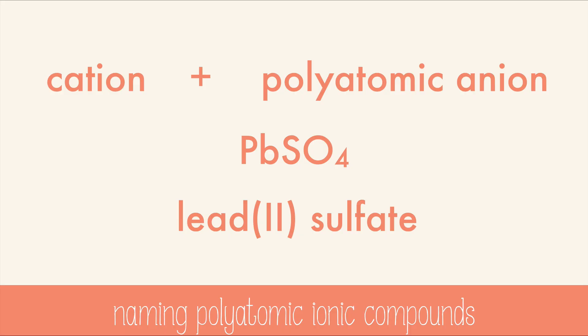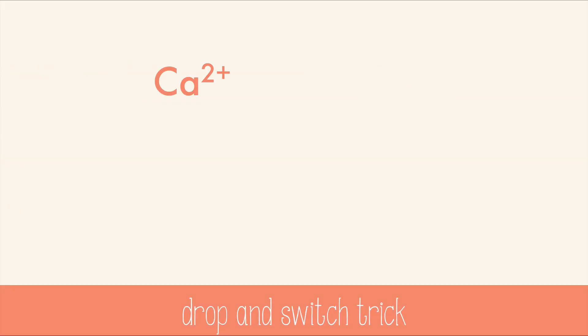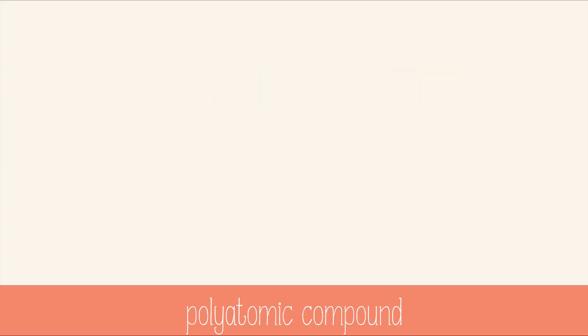And sometimes you have multiple polyatomic ions that are necessary, like in this case with calcium and the nitrate ion. Calcium is two plus, and nitrate is one minus. So when we do the drop and switch, we need to show that there are actually two nitrate ions, but it already has a subscript of three after the oxygen. So we use parentheses to show that there are two of the entire nitrate ion, and we get calcium nitrate.